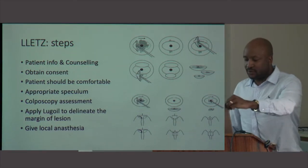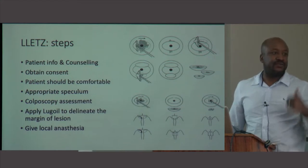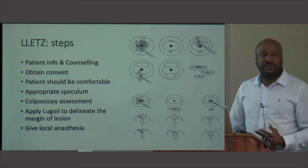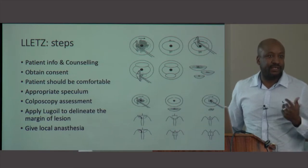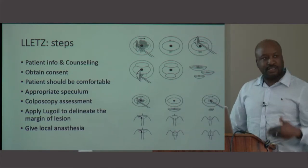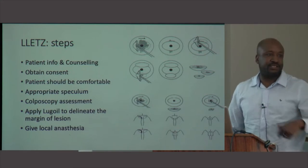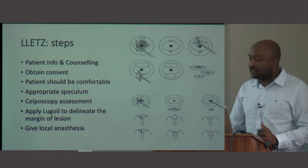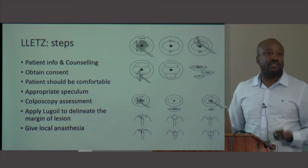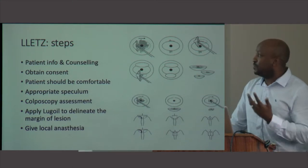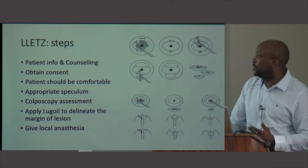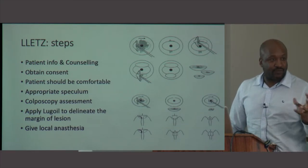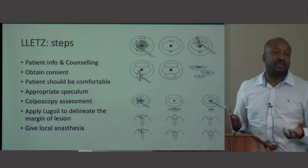Let me go through the steps again. The first step is to sit with the patient, discuss the cytology results, counsel the patient, and take all relevant information including patient risk factors, multiple sexual partners, previous visits, and so on. Obtain consent. It's very important to make sure the patient is comfortable because it's a procedure and patients are often quite anxious. When doing the procedure, start with a colposcope — don't go straight for the LLETZ without doing a colposcopy first.